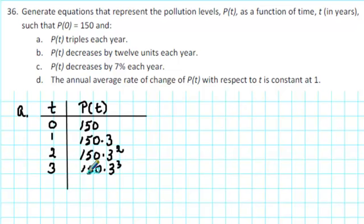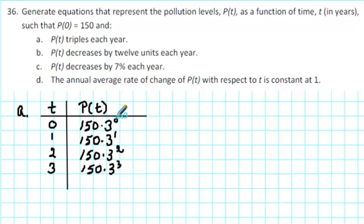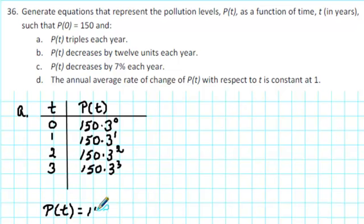Looking for a pattern: in each case we have 150 times a power of 3. When t is 3, the exponent is 3; when t is 2, the exponent is 2; when t is 1, we write 150 times 3 to the first; and when t equals 0, we write 150 times 3 to the 0, because 3 to the 0 is 1 and 1 times 150 is 150. So our equation is p of t equals 150 multiplied by 3 raised to the t, where t is time in years.